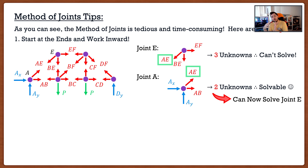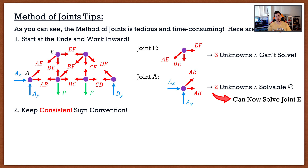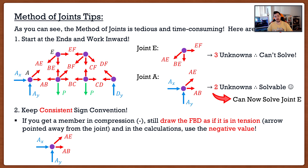The second tip is the most important one: keep a consistent sign convention. Every time I give a truss assignment, students have no problem with equilibrium or free body diagrams — they always have a problem with sign convention. Here's the key: if you solve for a member and get a negative value, meaning it's in compression, always draw the remaining joints as if that member is in tension, and just use the negative value in your calculations.